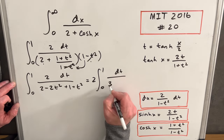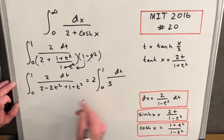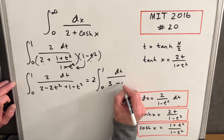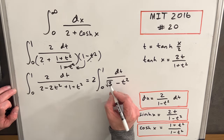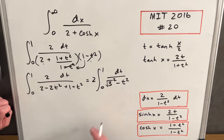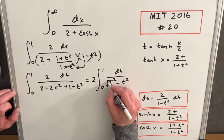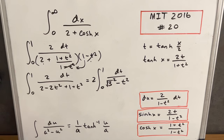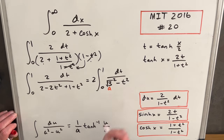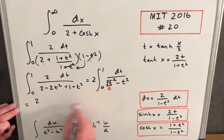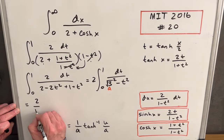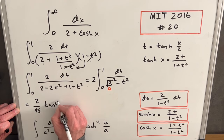Simplifying, I'll bring the 2 out front. Then 2 plus 1 is 3, and t squared minus 2t squared gives minus t squared. So we have 2 times the integral of dt over (3 − t²). This is a pretty familiar-looking integral. If I write 3 as (√3)², I can use a standard formula to evaluate it. The formula is the integral of du over (a² − u²).